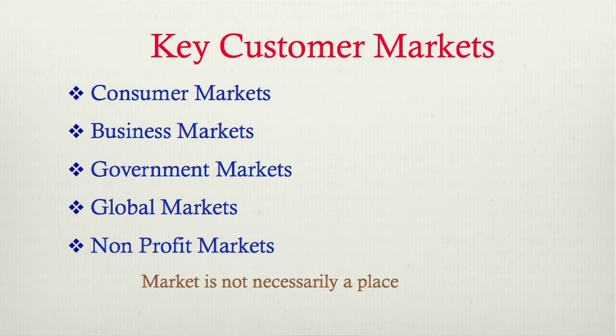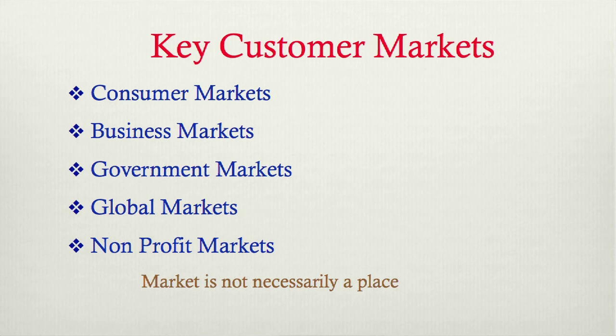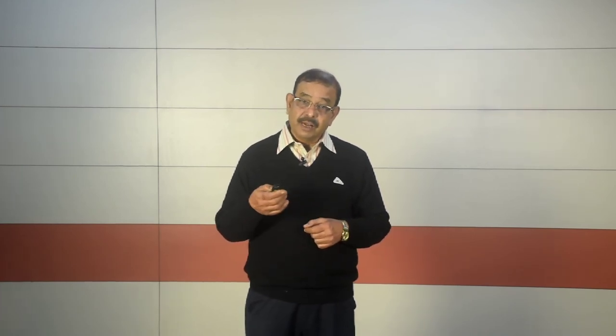There are also global markets — for example, LG is a Korean company, and Japanese automobile companies make sales in America or Canada — that is a global market. In addition, there are non-profit markets — universities and charitable organizations are not profit-making organizations but they also represent a big market. So market is not necessarily a place; it comprises various key customer markets: consumer markets, business markets, government markets, global markets, and non-profit markets.